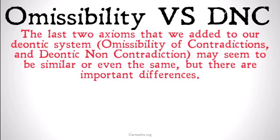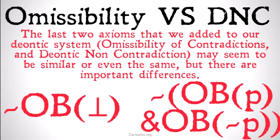The last two axioms we added to our deontic system — omissibility of contradictions and deontic non-contradiction — may seem to be similar or even the same, but there are important differences between these two axioms. If you want to try to prove one from the other or vice versa, you're not actually going to be able to. You can look carefully at these two definitions and see if you can guess what the important differences are going to be.